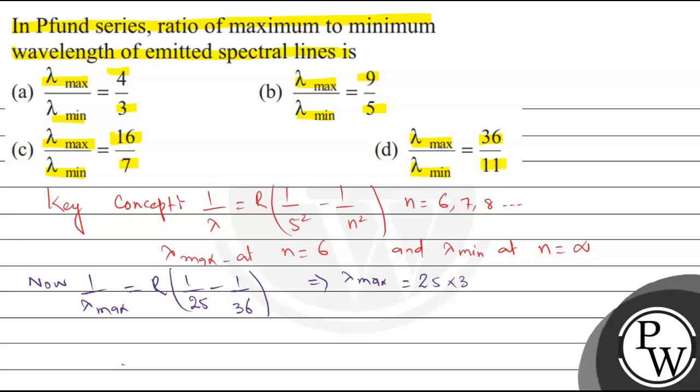Similarly, one upon lambda minimum equals R times one upon 25 minus one upon infinity squared. So here we get lambda minimum equals 25 upon R.